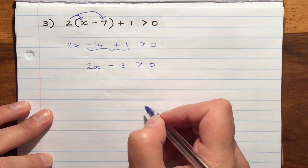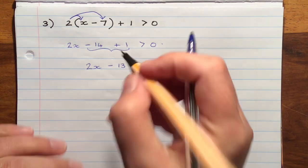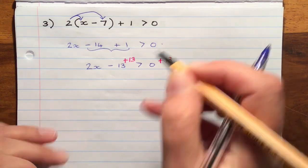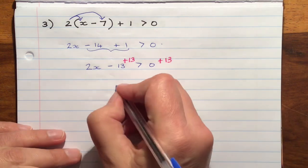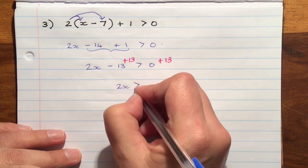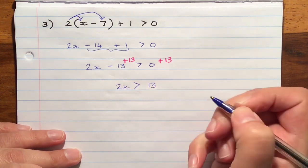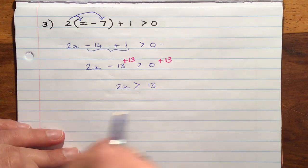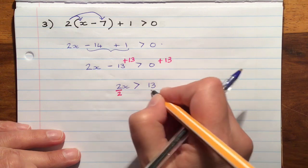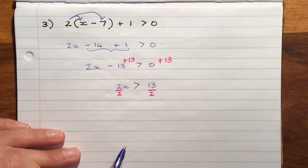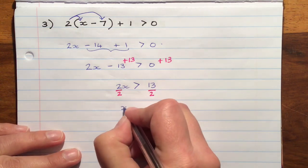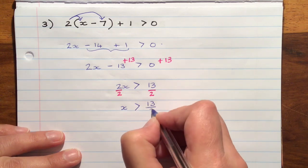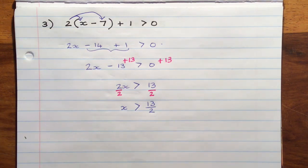What we can do now is we can add 13 to both sides and we're going to get 2x is greater than 13. And our last step is we're going to divide by 2. It's a positive number so we don't have to change the sign. So x is greater than 13 over 2.